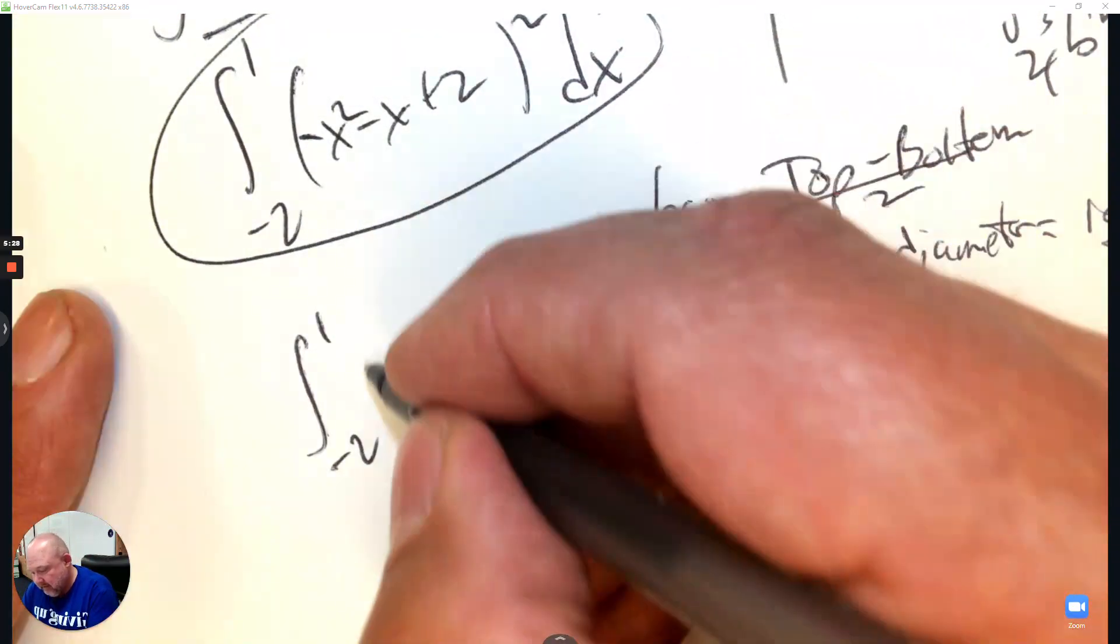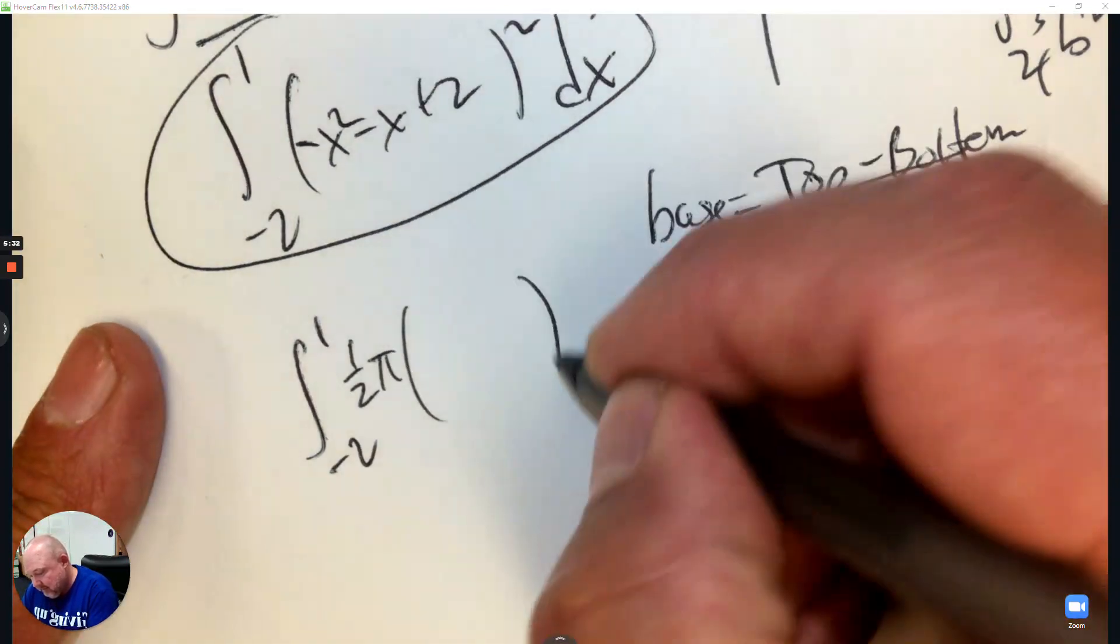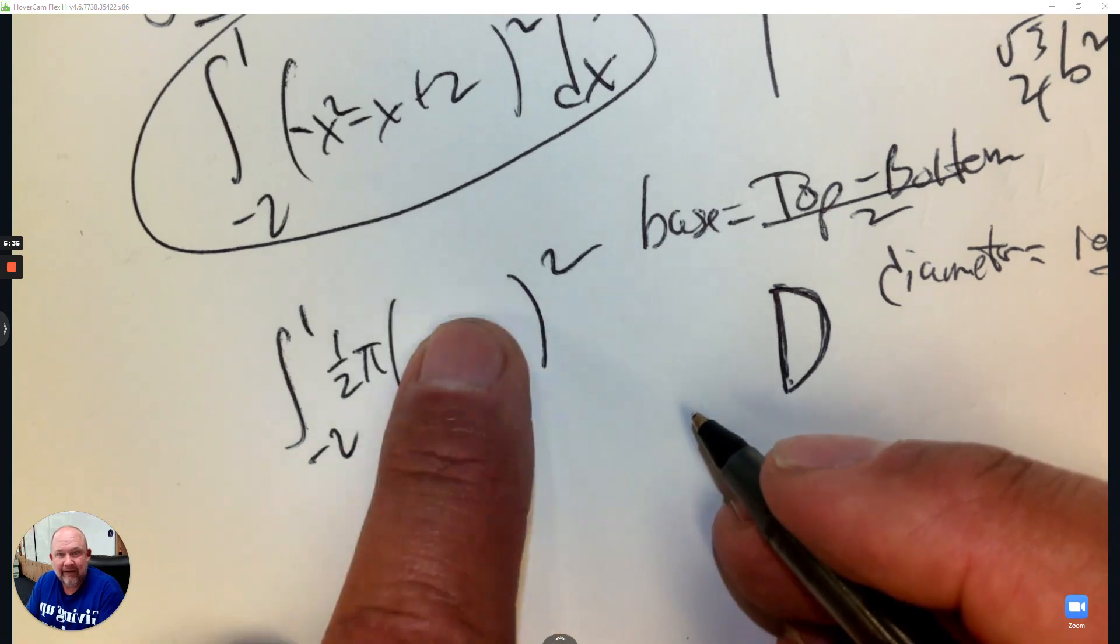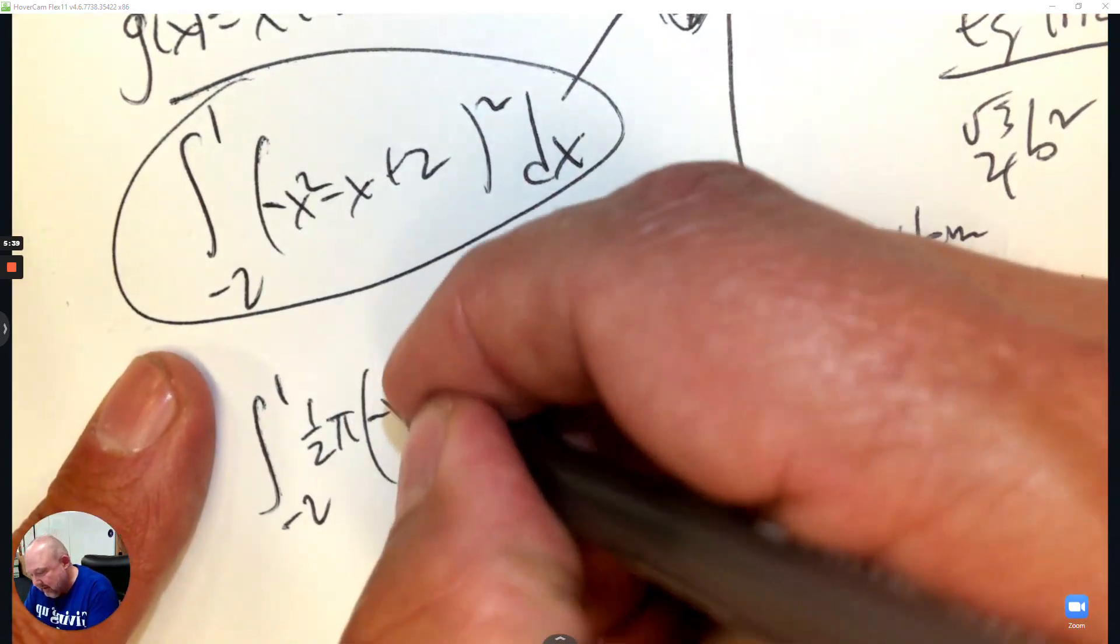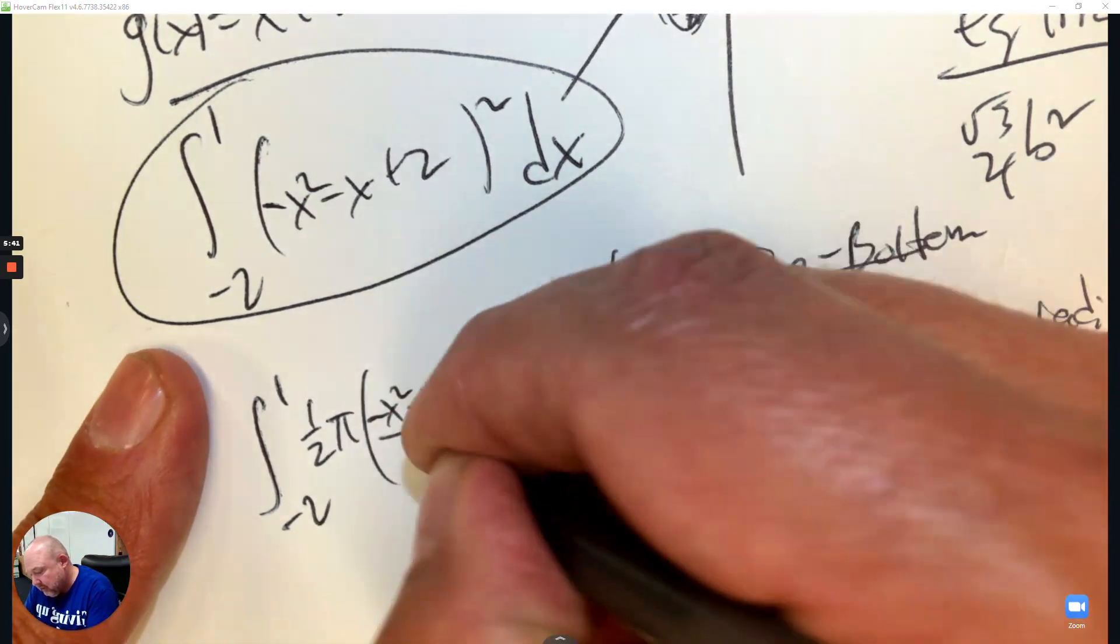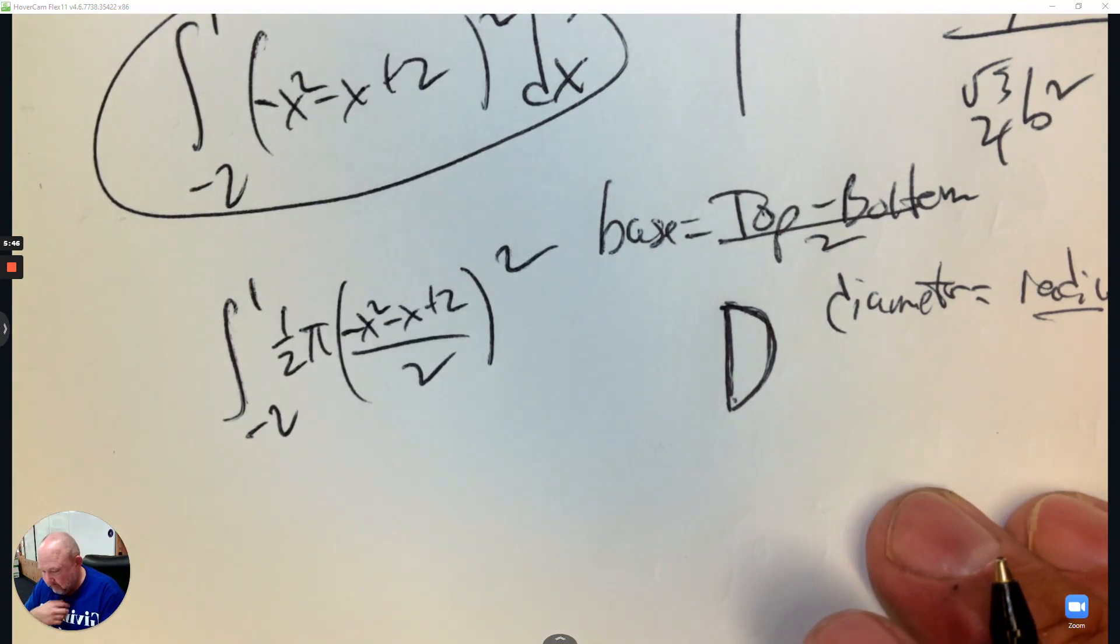So the formula is 1 half pi r squared, right? That's the formula for semicircle. And then inside the radius, this top subtract bottom, but I have to divide it by 2 so that it's the radius. And now that's the setup to find the volume using semicircles.